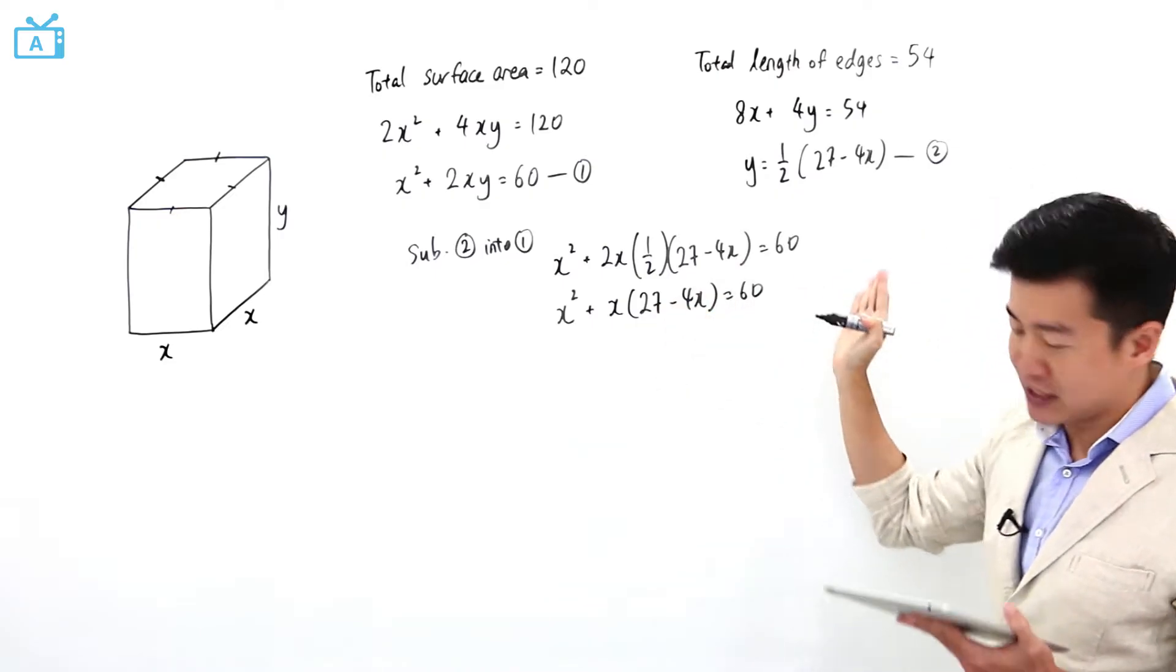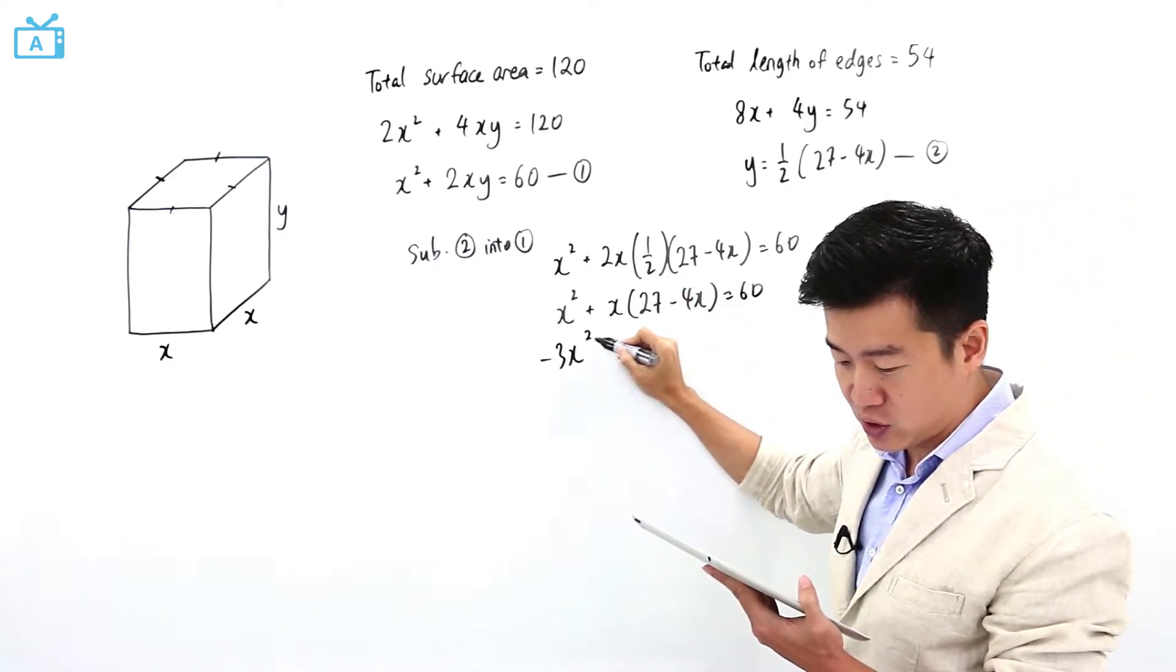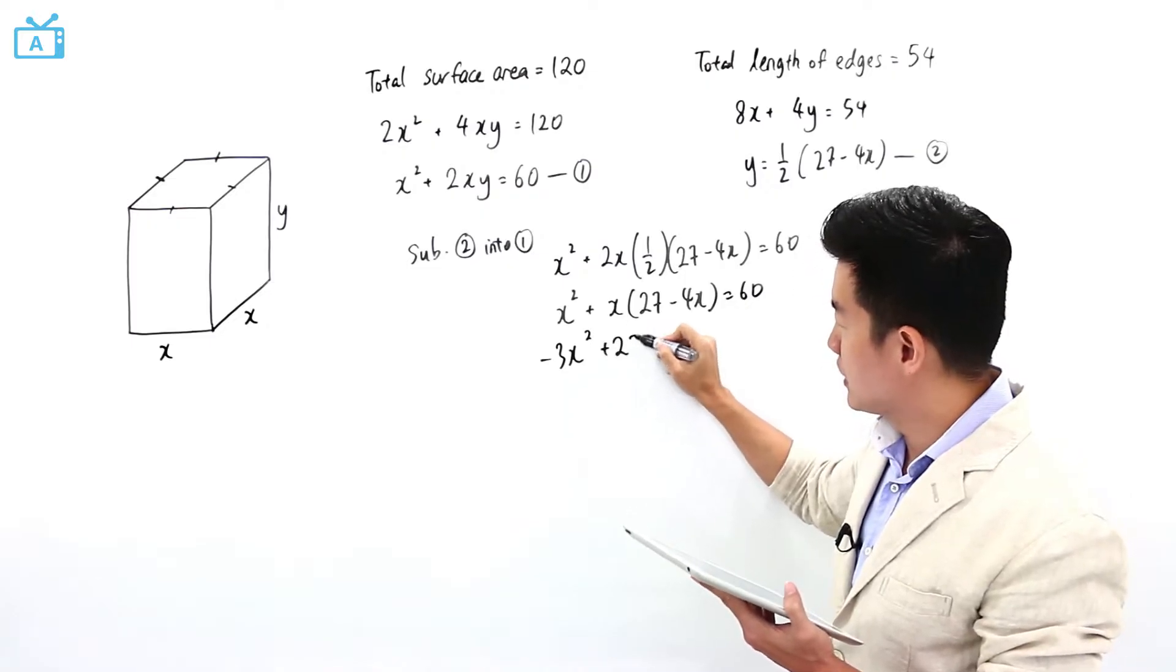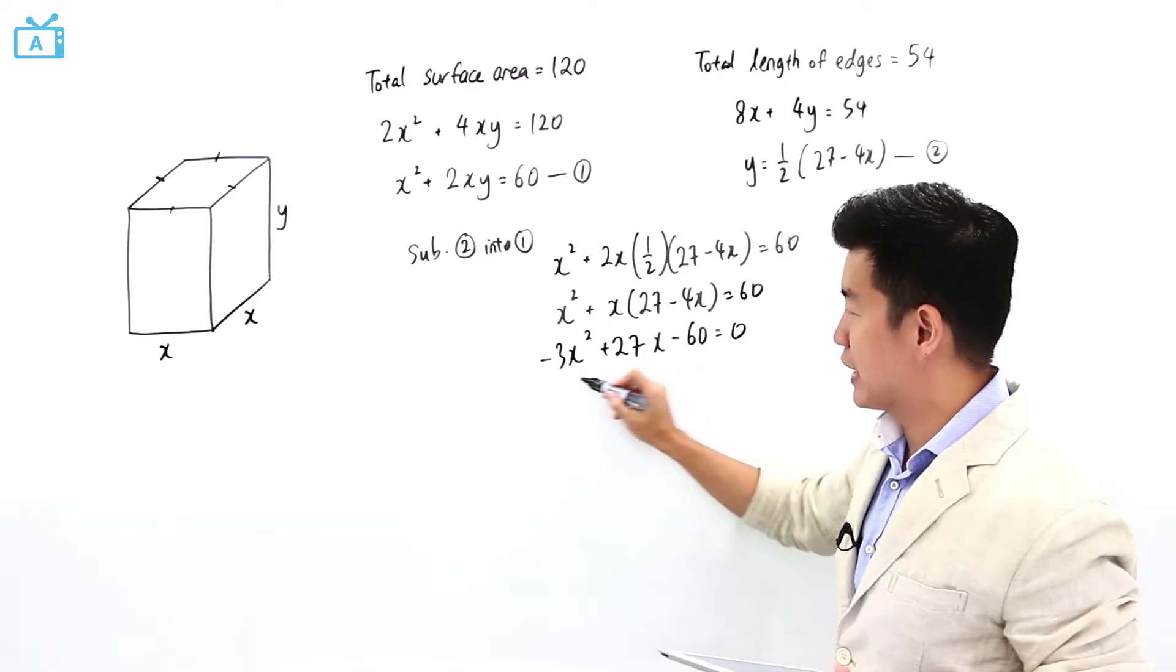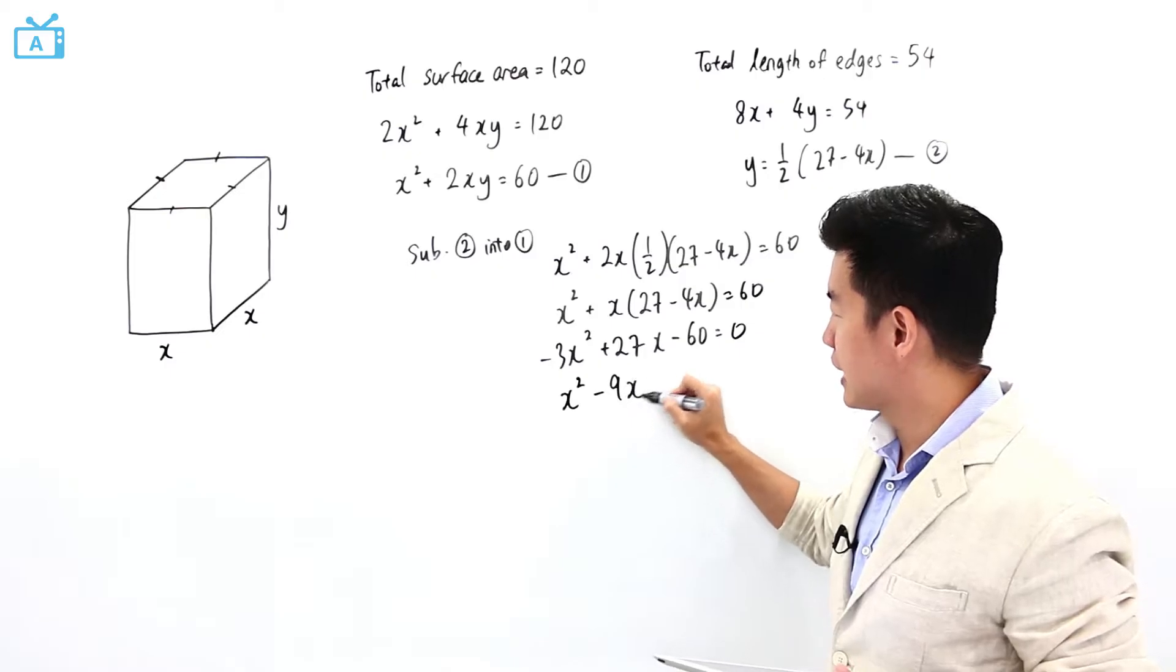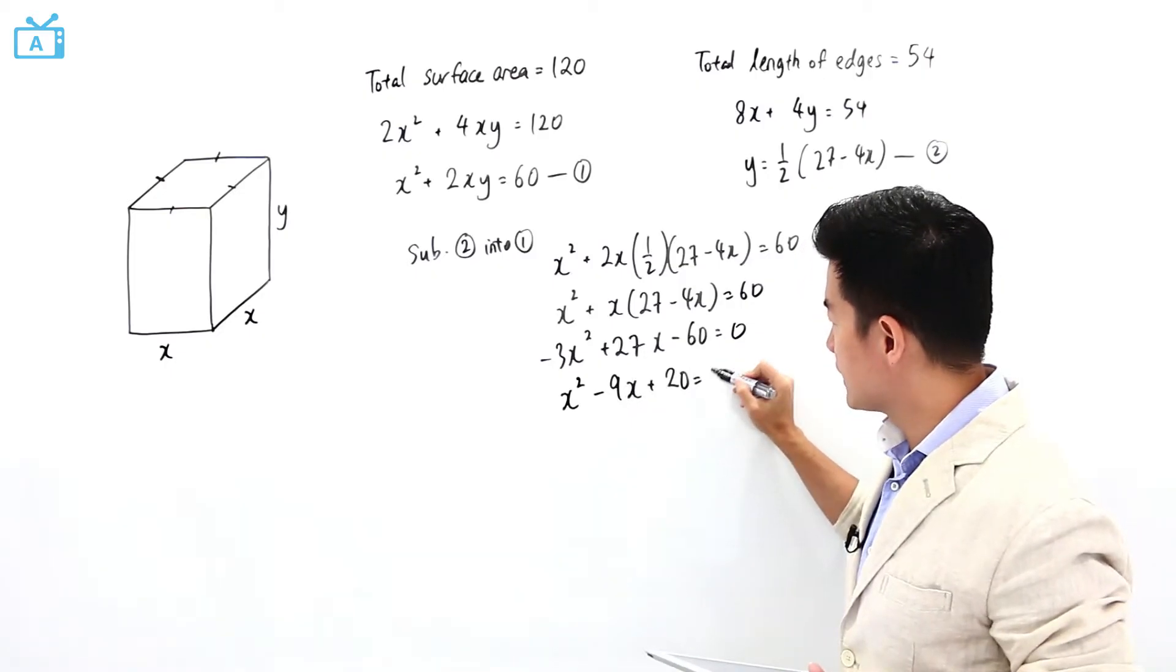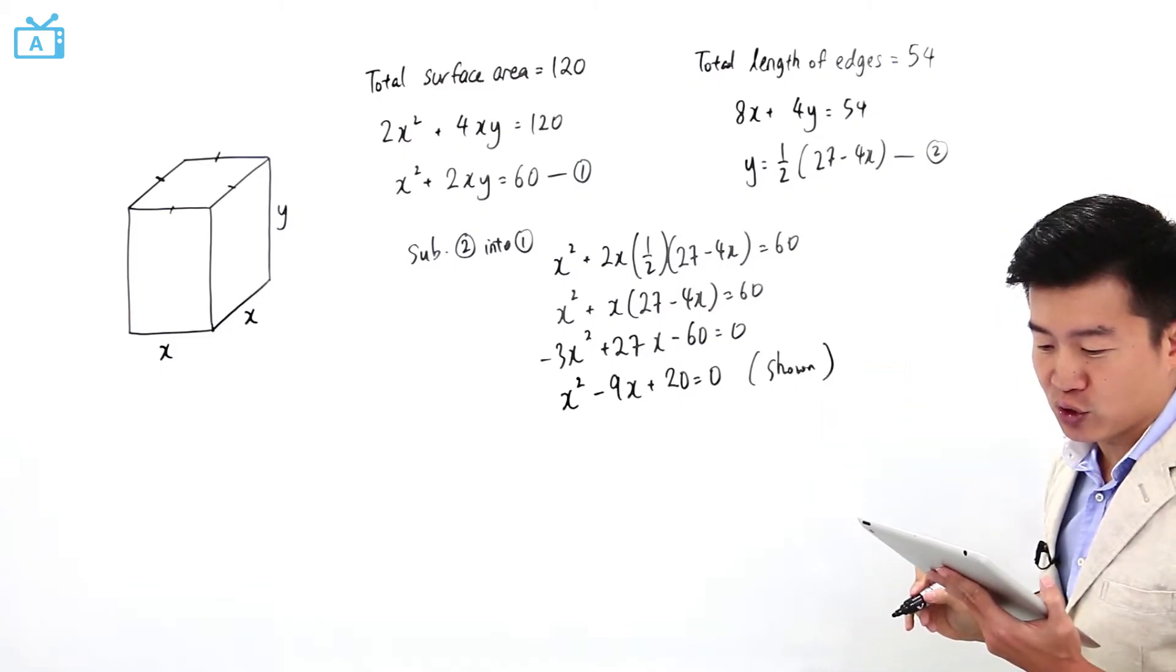If I were to expand this and shift everything over to the left-hand side, I will have minus 3x squared plus 27x minus 60 equals 0. And if I were to divide throughout by minus 3, I have x squared minus 9x plus 20 equals 0. And this is what the question wants me to show.